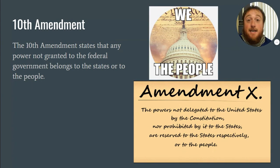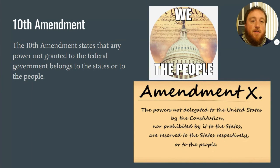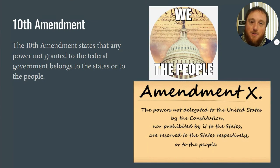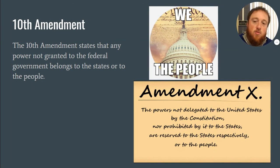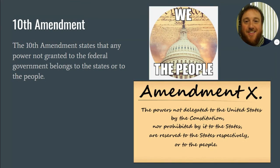So that's the Bill of Rights — our first 10 amendments to the constitution. We'll have another video talking about the other amendments. We have 27 total. We'll cover the important ones including Civil War era amendments and prohibition. Make sure you go back and look through the Bill of Rights and be ready. I'll see y'all later.